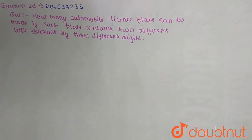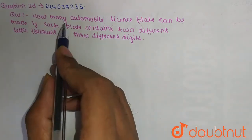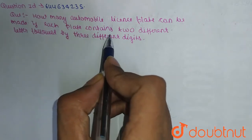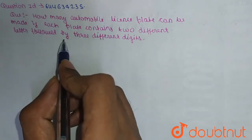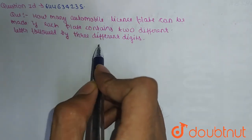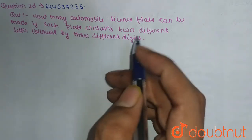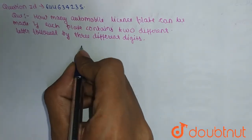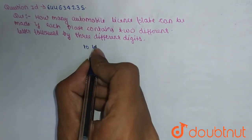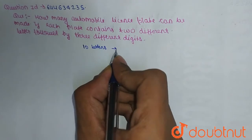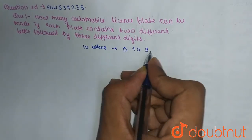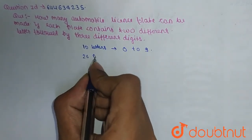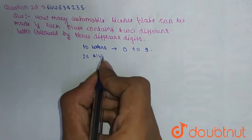...on PNC — permutation and combination. The question says: how many automobile license plates can be made if each plate contains two different letters followed by three different digits? As we know, there are 10 digits from 0 to 9, and 26 alphabets from A to Z.